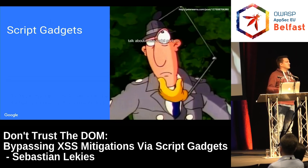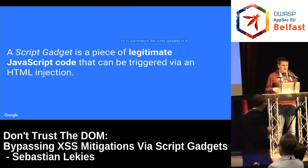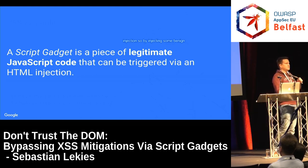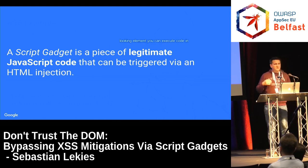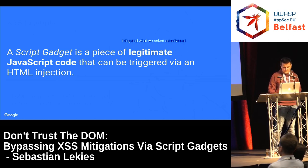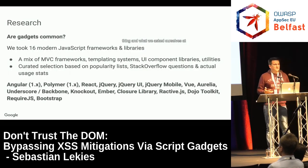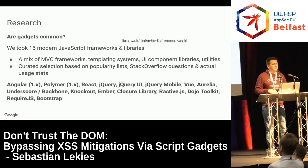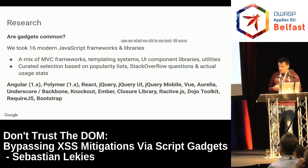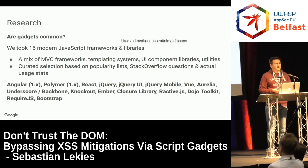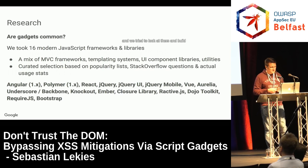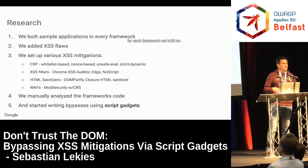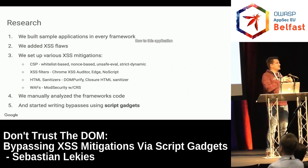To summarize: a script gadget is a piece of legitimate code in your page that can be triggered via an HTML injection. By injecting some benign-looking element, you can execute code through a function that does a certain thing. We asked ourselves: are these gadgets common? We took 16 JavaScript frameworks — based on popularity, GitHub stars, and usage stats — and tried to build applications out of these frameworks. For each framework we built an application, added an XSS flaw, and set up mitigations.